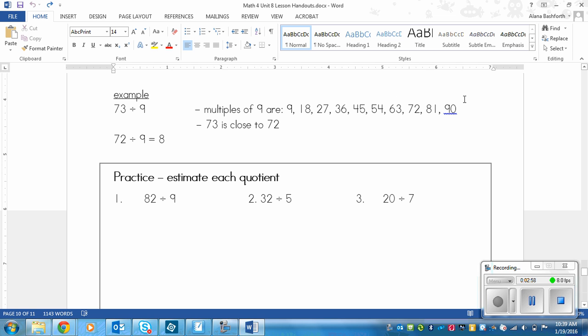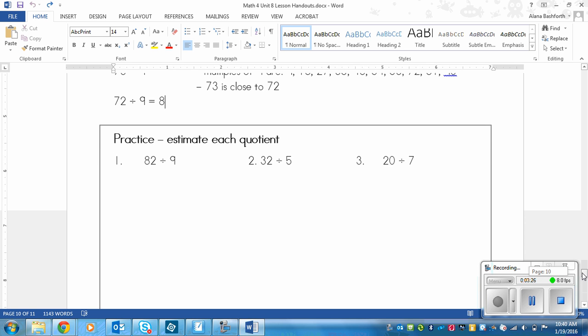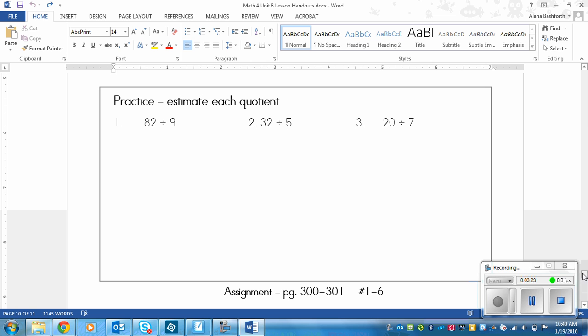It's not bigger than 90, so I probably went even further than I needed to. Then I look at the bigger number and I look at which multiple 73 is closest to. Which multiple of 9? Well, it's closest to 72. It's right there. So I will change 73 to 72 for purposes of estimating. And that means that 73 divided by 9 is about 8, because 72 divided by 9 is 8. So hopefully that's making sense to you. It's a really simple concept in my mind anyways.